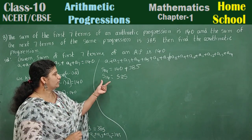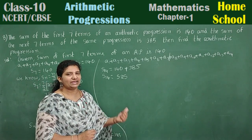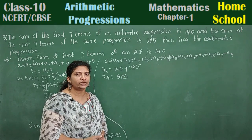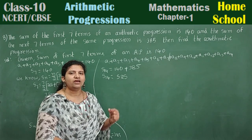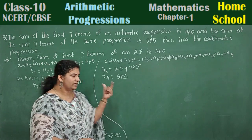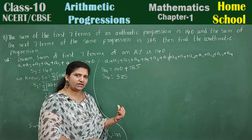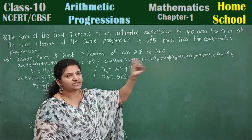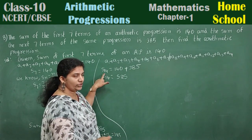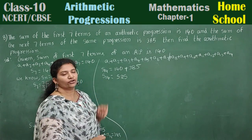Now simplify S14. We know the formula: Sn is equal to n by 2 into 2a plus n minus 1 into d. Here n is 14. So S14 is equal to 14 by 2 into 2a plus 14 minus 1 into d, which equals 525. That simplifies to 7 into 2a plus 13d equals 525. Dividing both sides by 7 gives 2a plus 13d is equal to 75.